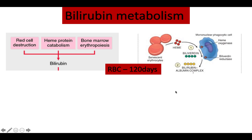Bone marrow is the progenitor of red blood cells. The kidneys produce a hormone called erythropoietin, which signals the bone marrow to start a process known as erythropoiesis — forming reticulocytes. Reticulocytes are immature red blood cells. Once they become mature, they form red blood cells, which are carriers of oxygen.